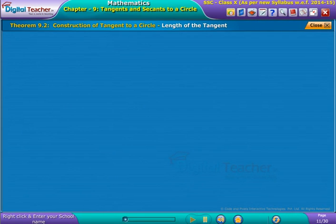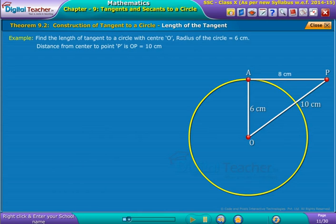To find the length of the tangent to a circle from a given point, take an example to prove it. Find the length of tangent to a circle with center O. Radius of the circle is equal to 6 cm. Distance from center to point P is OP equal to 10 cm.